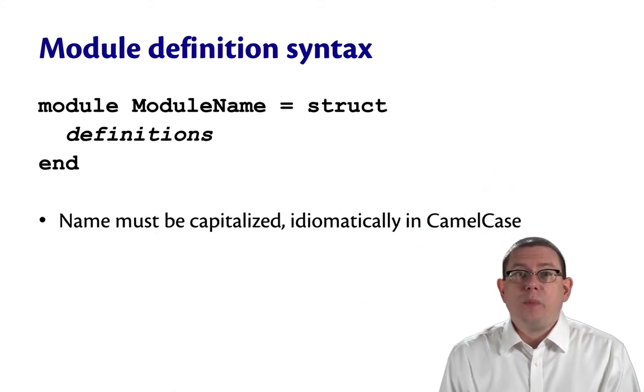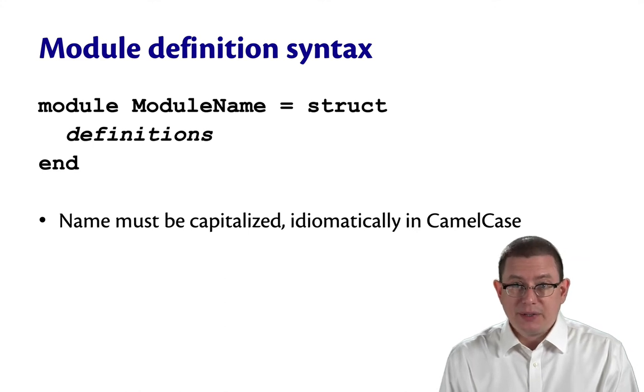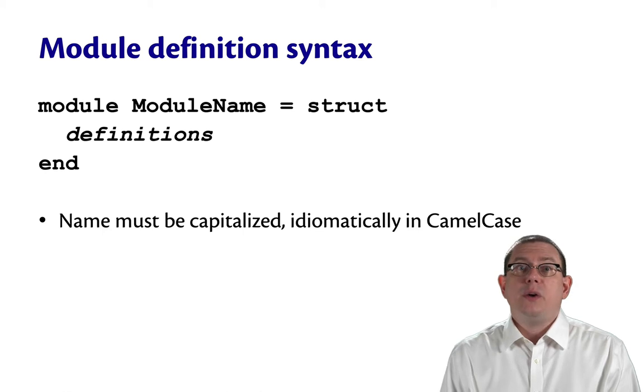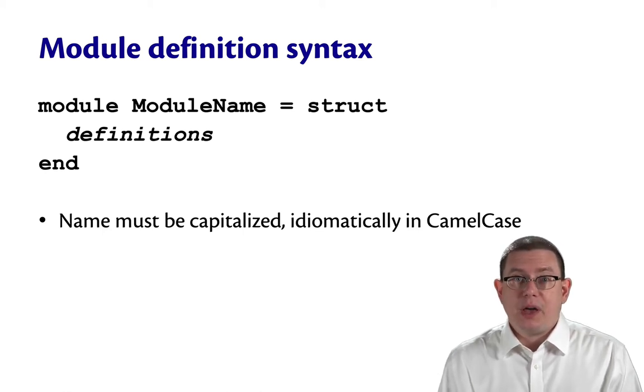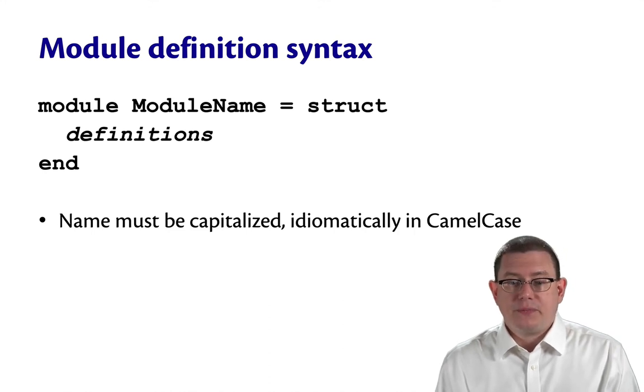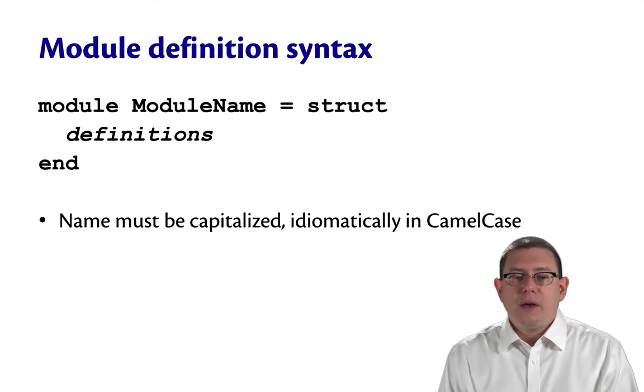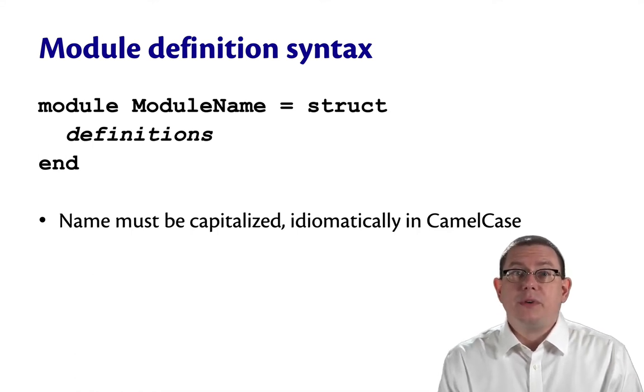The name of a module must be capitalized. So that's different from other identifiers that we've seen so far. When you bind with a module definition, you have to capitalize. When you bind with a let definition, it must be uncapitalized. Idiomatically, module names are written in camel case rather than snake case. That's another difference from let definitions.